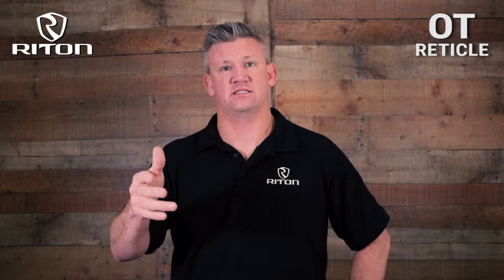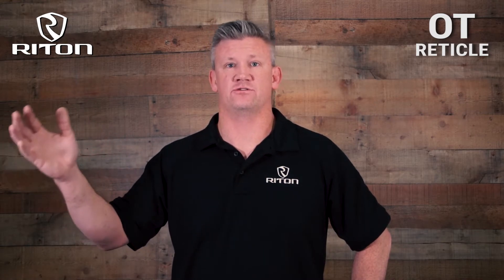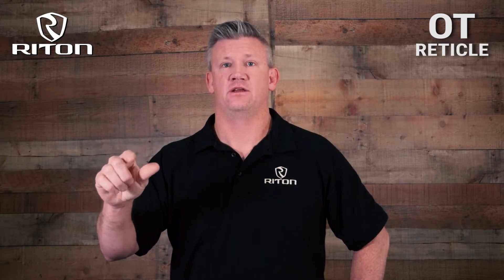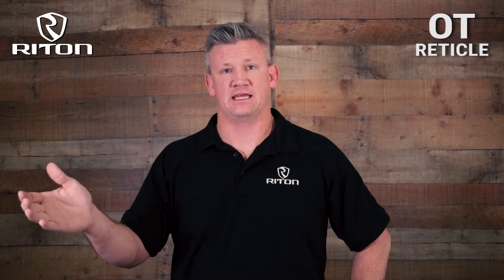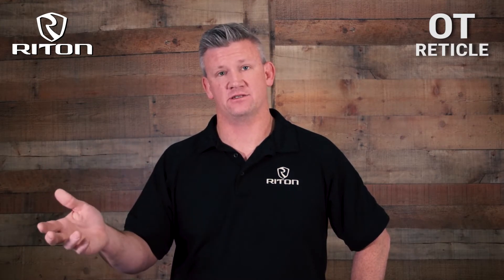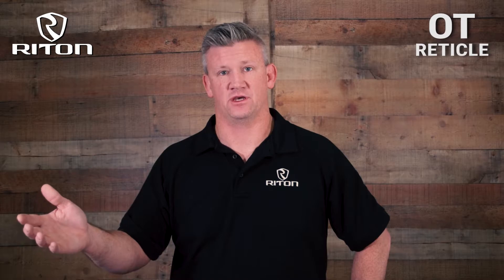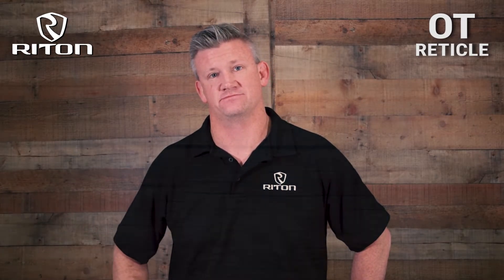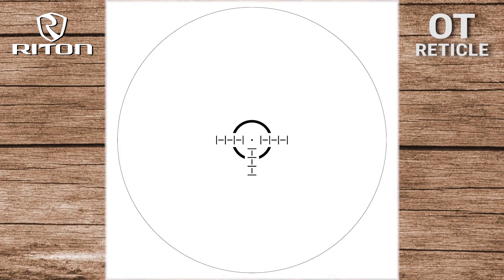This is because our target grows and shrinks but our reticle does not. We need to take this into account when picking and using a scope so that we know our accurate sub-tensions. Now let's talk about the OT reticle — it has many uses but was made primarily for tactical applications.